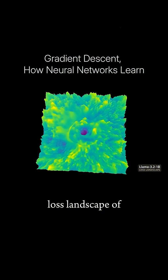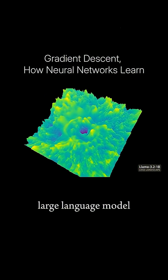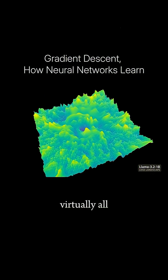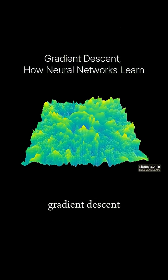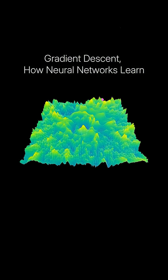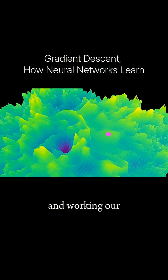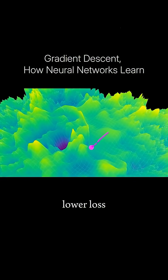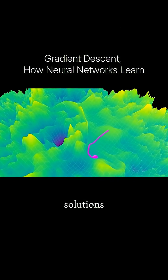This is the loss landscape of Meta's Llama 3.2 Large Language Model. Virtually all modern AI models learn by gradient descent. Visually, this looks like starting at a random location on our landscape and working our way downhill towards lower loss, higher performance solutions.